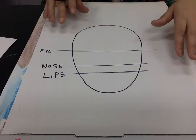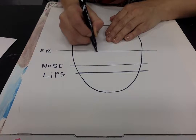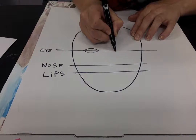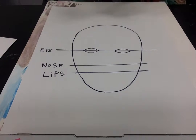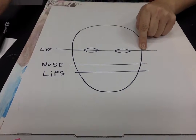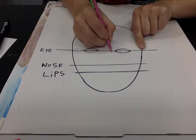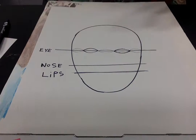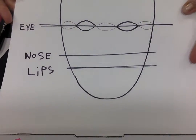Now when you go to draw the eyes, don't make them too large, because you should be able to fit about five eyes across this line. The width of your head is about five eyes wide. So you can fit five eyeballs across.